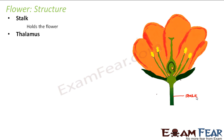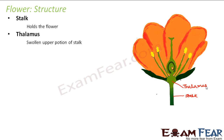Next is the thalamus. Just towards the top of the stalk, you see a swollen structure — this swollen structure is the thalamus. It is the swollen upper portion of the stalk. Since the thalamus is a swollen portion, the entire structure of the flower can properly sit over it.